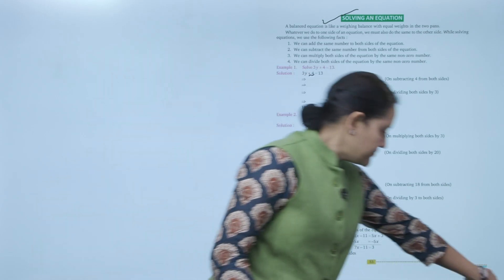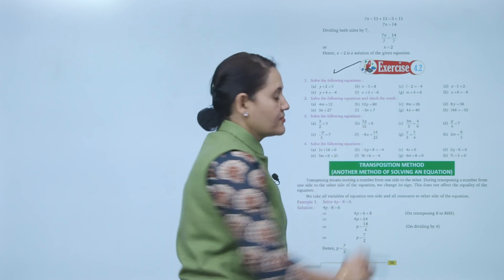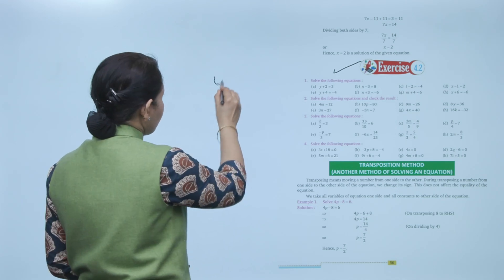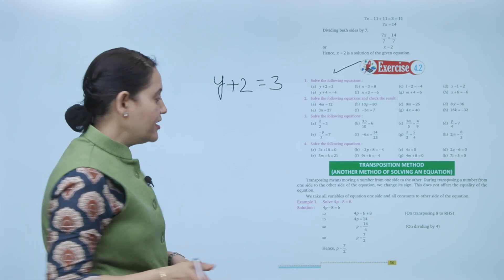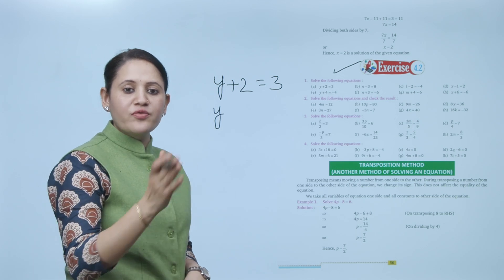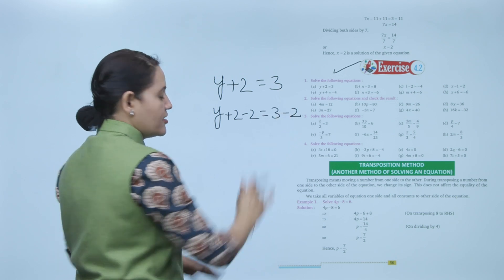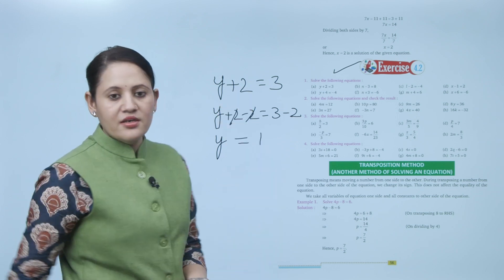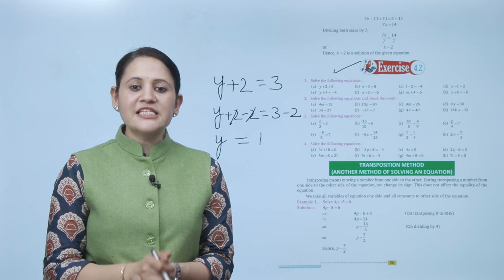Next is Exercise 4.2: solve y plus 2 equals 3. We need to find the value of y. We subtract 2 from both sides, so y equals 1. The value of y is 1. Practice all the questions of this exercise.